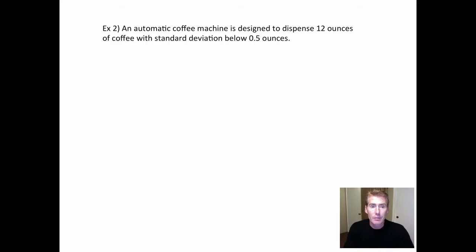All right, here's a second example. So there's this automatic... And you know what? You can do this with any machine. You can just say this automatic machine is supposed to do such and such. And the standard deviation needs to stay below. So in other words, when it's an automatic machine, there's going to be some variation.